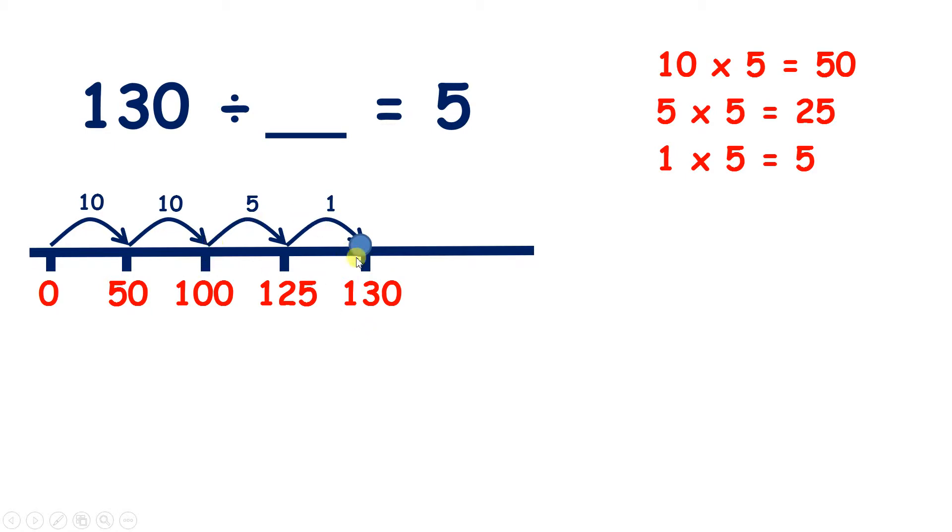Now we could have added six 5s to get to 130, but either way, we've counted on a total of 26 5s, so 130 divided by 26 equals 5.